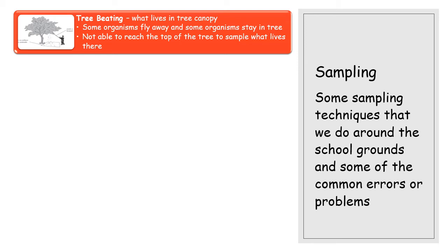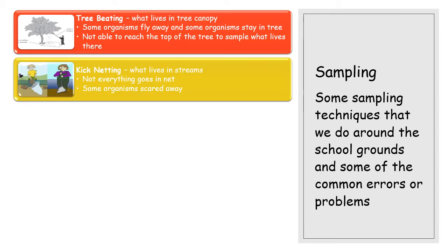Tree beating is a simple one: you have a white sheet, hold it underneath the tree, then someone comes along with a stick and shakes the branches, and organisms fall off into your sheet so you can identify them. Problems are that some organisms fly away, not every organism falls off — it can latch on or be burrowed within the branches — and we're not always able to reach the top of the trees. Different organisms can live at the top and bottom, so it doesn't always give an accurate sample.